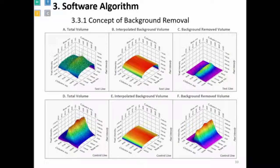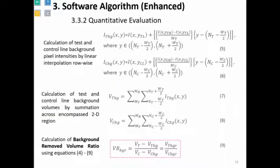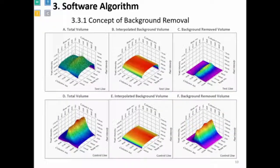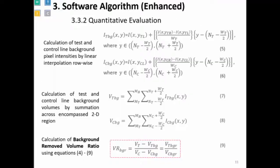You can see the test line with its baseline representing the background. We have no basic model for this, so we derive a model that performs linear interpolation to estimate and remove that background region. The background volume is subtracted from the actual test line volume, yielding the test line minus background — and the same process is applied for the control line. Equations show the initial intensity via linear interpolation, and the volumes of test background and control background are calculated accordingly. The updated VR background-removed equation becomes: V(test line minus background) divided by V(control line minus background).